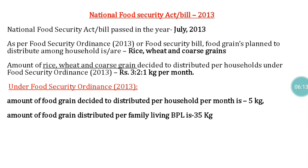The National Food Security Act 2013 was passed in Parliament in July 2013. As per the Food Security Ordinance 2013, the grains planned for distribution in the public distribution system are rice, wheat, and coarse grains, at a ratio of 3 kg of rice, 2 kg of wheat, and 1 kg of coarse grains per month. The total food grain to be distributed per household per month is 5 kg, while families below the poverty line receive 35 kg.